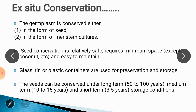Advantages of ex-situ conservation: it is possible to preserve entire genetic diversity of a crop species at one place. Handling of germplasm is also easy and it is a cheap method of germplasm conservation. In ex-situ conservation, germplasm is conserved either in the form of seed or meristem culture. Seed conservation is relatively safe, requires minimum space except for coconut, and is easy to maintain compared to meristem culture, pollen, or DNA. For seed conservation, glass, tin, or plastic containers are used for storage. Seeds can be conserved under long-term, medium-term, or short-term storage conditions.